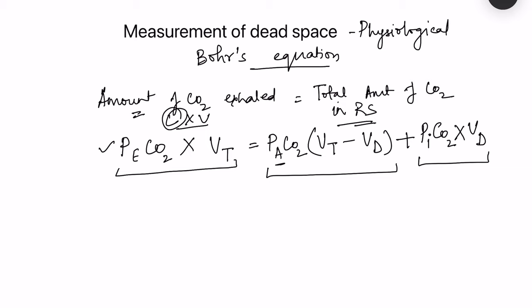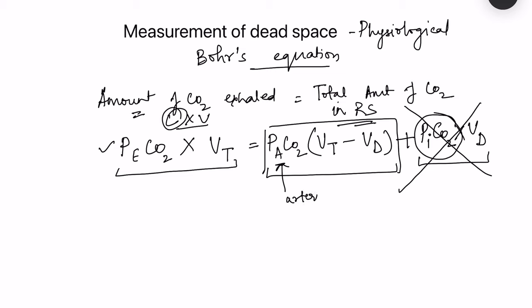Simplifying: the partial pressure of inhaled CO2 is almost zero, so we neglect that term. Also, alveolar CO2 partial pressure is equivalent to arterial CO2 partial pressure because gas exchange equilibrium has occurred there. So the simplified equation becomes: PECO2 × tidal volume = PaCO2 × (tidal volume − dead space).